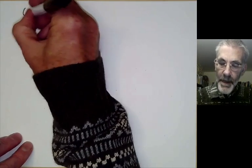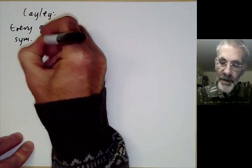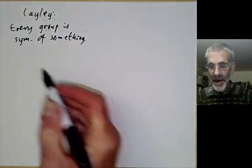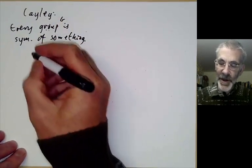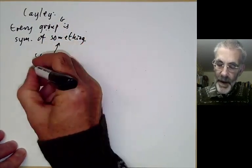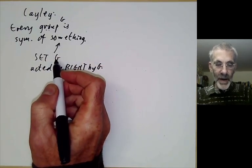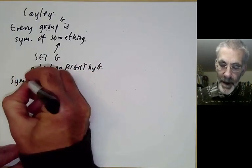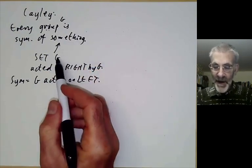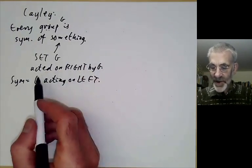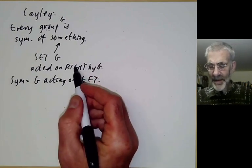Next we have Cayley's theorem, which says that every group is the symmetries of something. For every abstract group you can find some mathematical object such that it's the group of symmetries of it. If the group is G, then this something is going to be the set G acted on the right by G — you can think of G as an abstract set with an action of right multiplication by G, and the symmetries are given by G acting on the left. This is very confusing because there are three copies of G: G considered as a set, G acting on the right, and G acting on the left — and the left action is the set of symmetries of G with the right action, because the left and right actions commute.